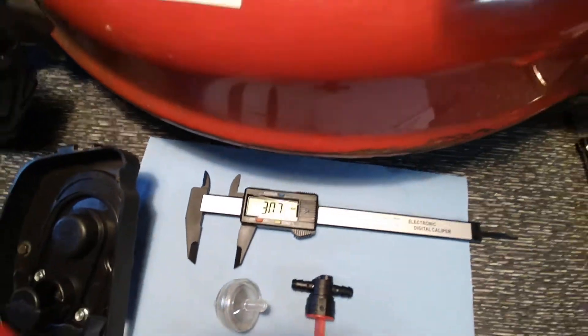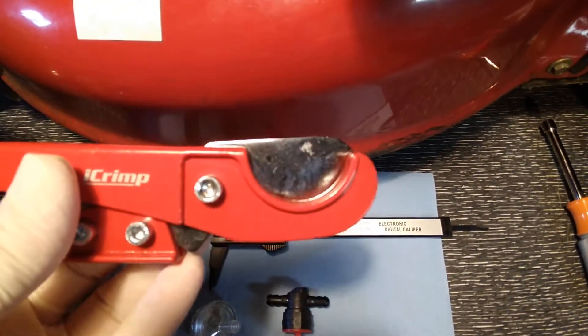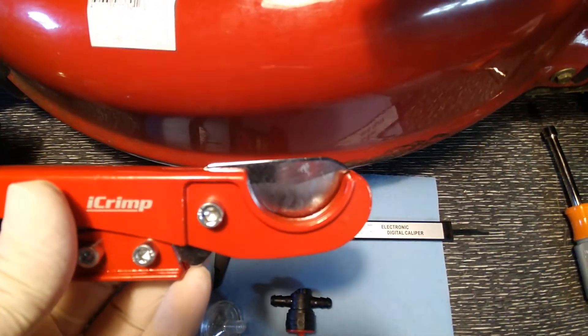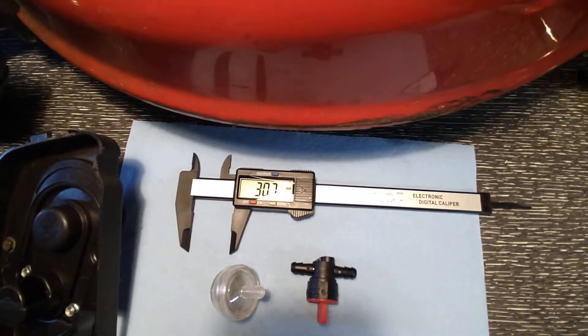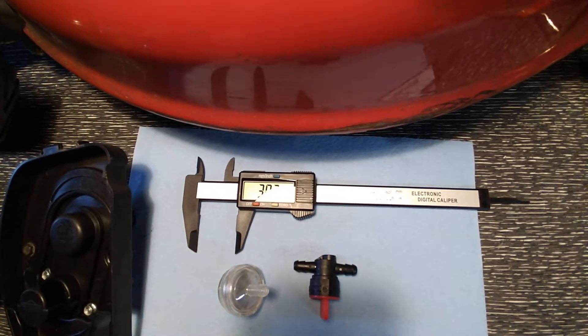To cut the fuel line, I use this here, it's a PEX tubing cutter. I'll try and put a link below in my video. You want to cut the fuel line quickly and perpendicular when you have it in the cutter.